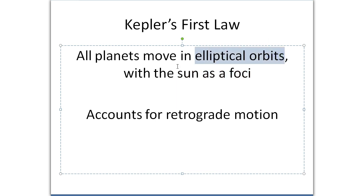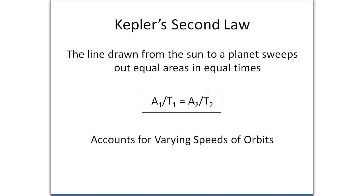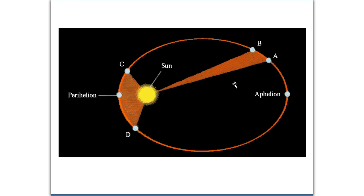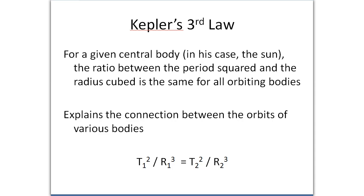This was very groundbreaking because nobody else had considered using elliptical orbits. He also came up with a second law, which was very nice because it allowed you to explain, mathematically at least, a reason for the varying speeds of the planets. It didn't actually tell us why they speed up and slow down, but it gave us a way to understand where a planet is going to be at any given point in time. Then he had a third law, which links each of the motions of the planets to the sun.